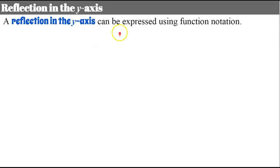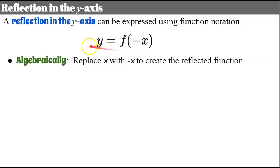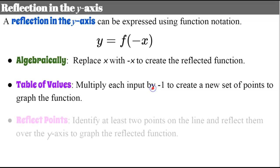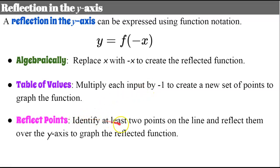Now let's talk about reflections in the y-axis. A reflection in the y-axis can be expressed using function notation as y equals f of negative x. When reflecting in the y-axis, we change all inputs to their opposites, multiplying all inputs by negative one. We'll do this three ways: algebraically by replacing x with negative x; using a table of values by multiplying each input by negative one; and by reflecting at least two identified points over the y-axis.